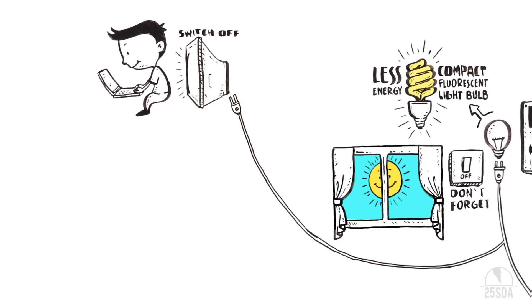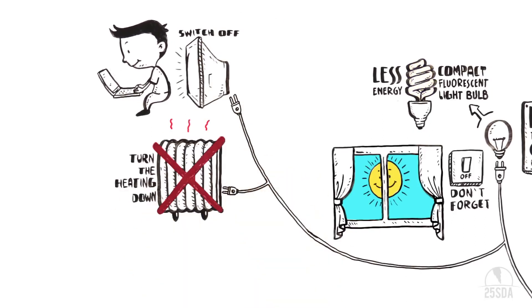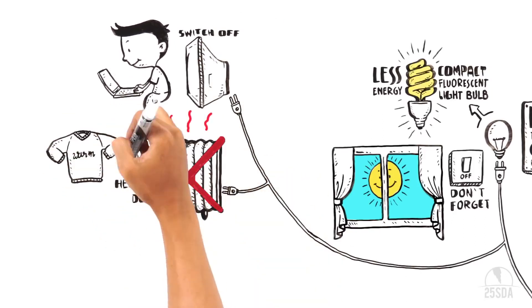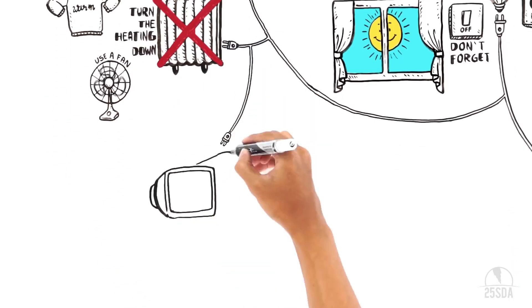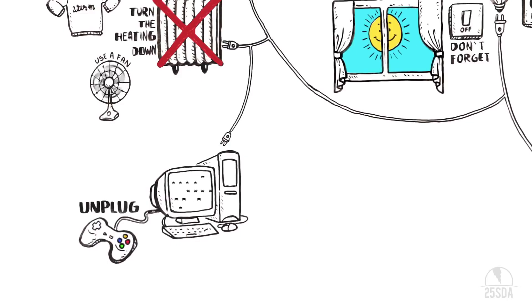Just turn off the TV when you're not watching it. Turn the heating down. If it's cold, wear more clothes. And when it's hot, try using a fan. When you're not using them, why not unplug some machines? Like computers, TVs, radios, and video game systems.